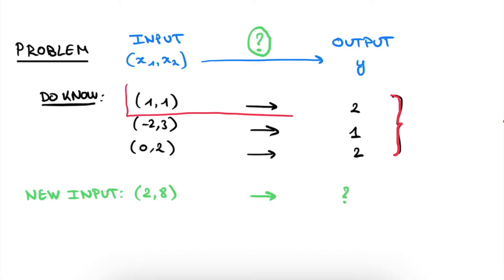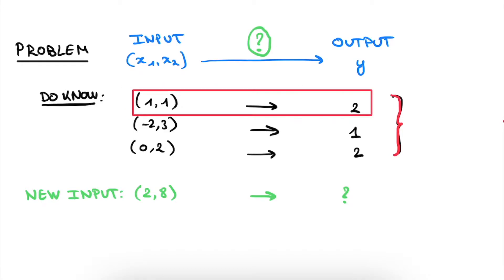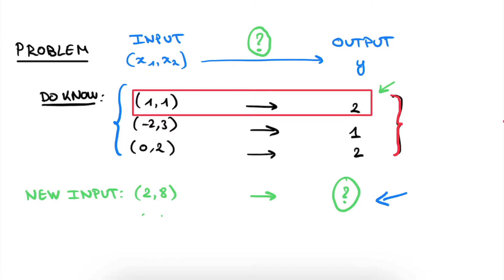In this particular video we'll look at the case where we only have one example — input 1,1 which gives output 2. How will we use this information together with a neural network to find the output for a new input, say 2,8? The goal is to train a neural network such that any input we give it will produce the right output in accordance with this example. This is exactly how neural networks need training data: examples of input and output, used in the training algorithm to give outputs for any new input numbers.